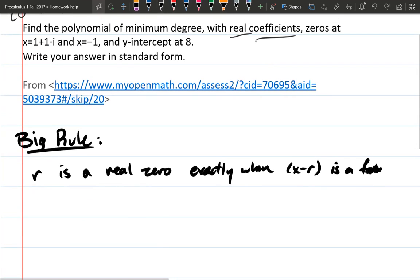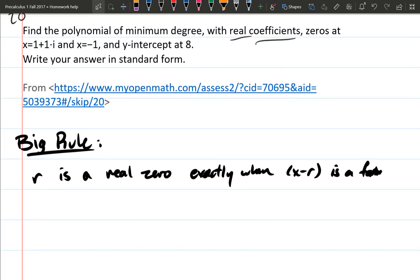So the important thing to understand here is the big rule. This was from 3.1 when you graphed and you had factors turning into zeros, and it says that r is a real zero exactly when x minus r is a factor. So what I'm going to do is write down zeros and then the factor they correspond to, and this actually does not even require the zero to be real. R is a zero exactly when x minus r is a factor.